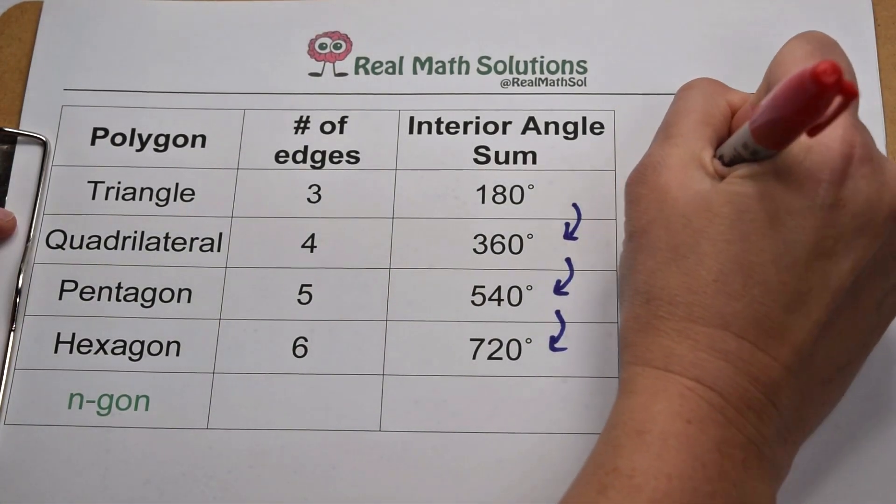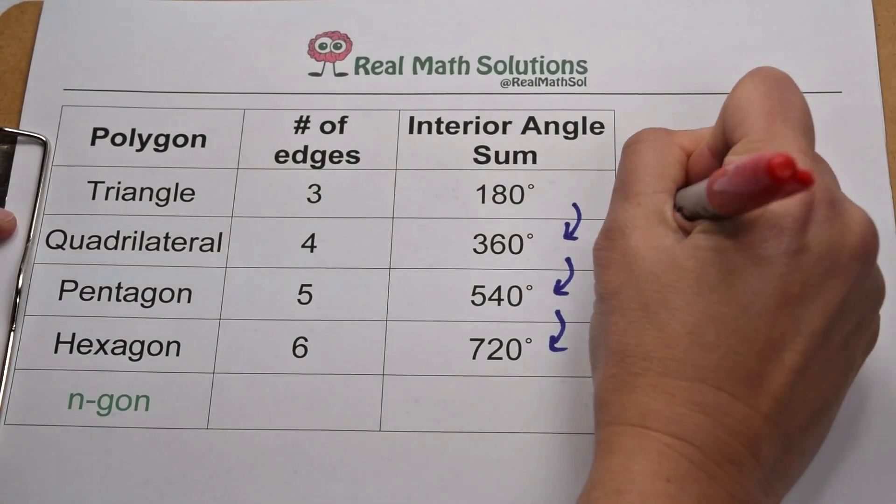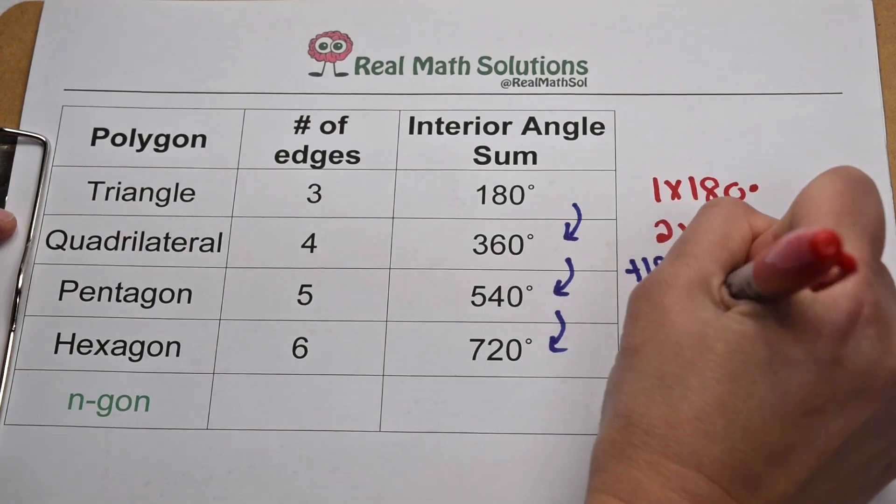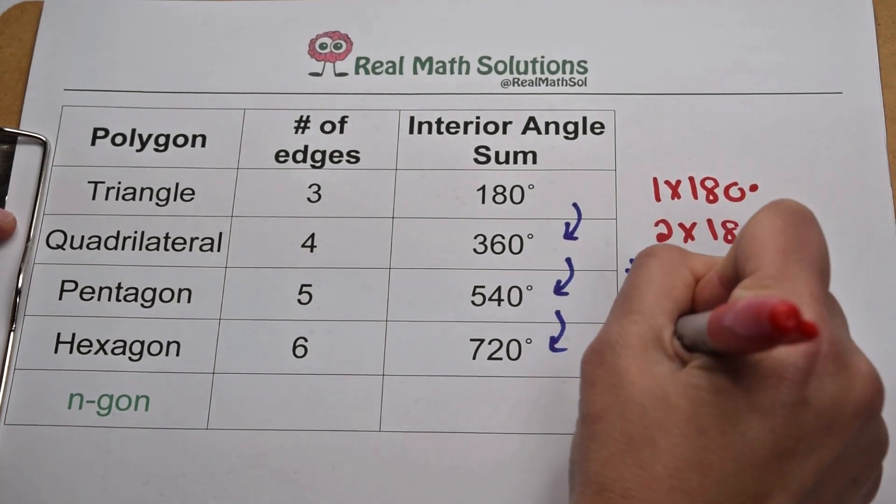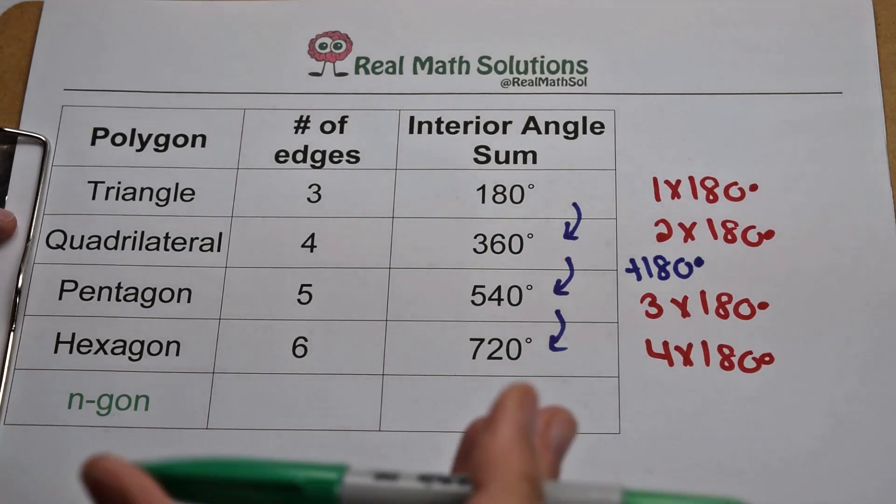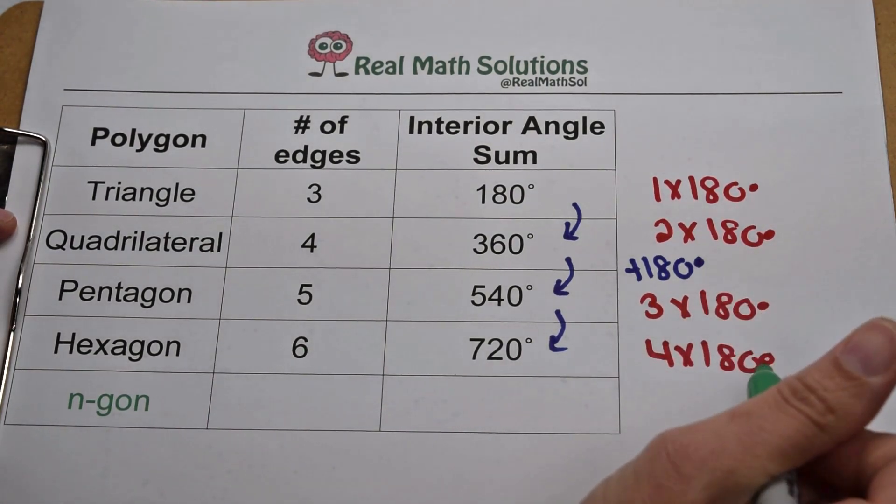So the triangle would be 1 times 180, the quadrilateral is still 2 times 180, the pentagon 3 times 180, and our hexagon is 4 times 180. So just like with regular polygons, we can see that we're always multiplying something times 180.